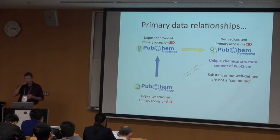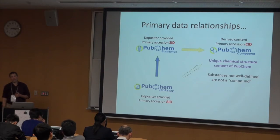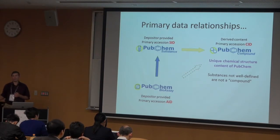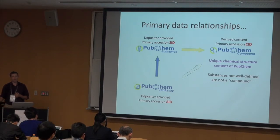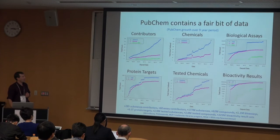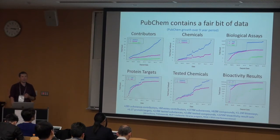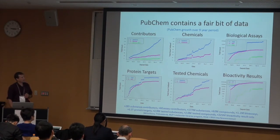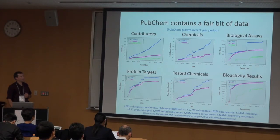Substances that are not well-defined are not a compound. We're considering creating a PubChem biologics resource. In 2010 there were no biologics in the top 10 grossing drugs; in 2012 it was 50%, and in 2013 it was 70% — the rise of biologics. In terms of data scale: nearly 300 contributors, over 170 million chemical substance descriptions, 62 million small molecules, 2 million tested chemicals, a couple hundred million biological activity results, over a million bioassays.